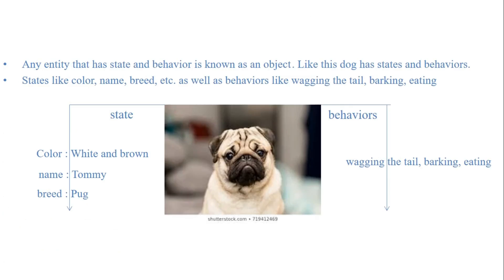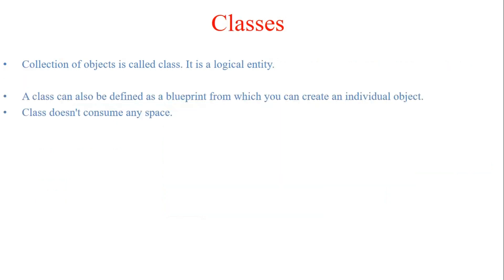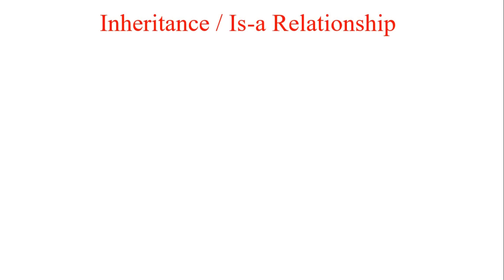Objects are nothing but entities which have state and behavior. For example, state would be: it's white and brown, its name is Tommy, its breed is Pug. The behavior is that it wags its tail, it barks, it eats. Class is a logical entity — nothing but a blueprint of an object — and it does not consume any memory space; the actual space consumed is for the object.